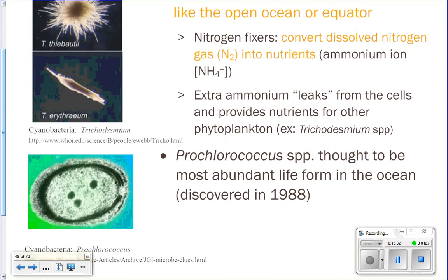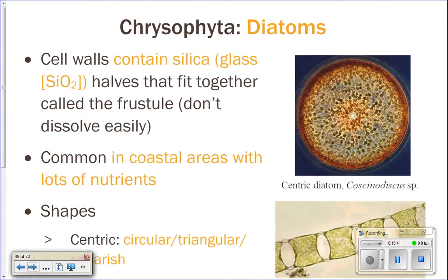They actually allow for life to exist because they fix nitrogen. Diatoms have cell walls that are made out of silica, or glass. Their glass cell walls are made out of two pieces that fit together perfectly, and we call it a frustule.